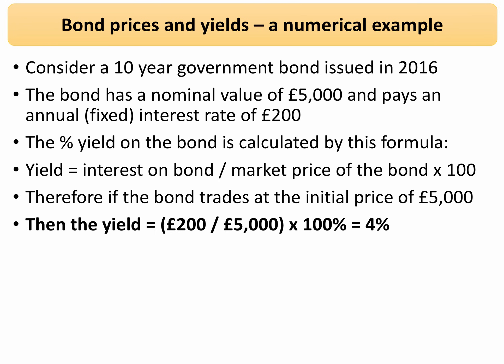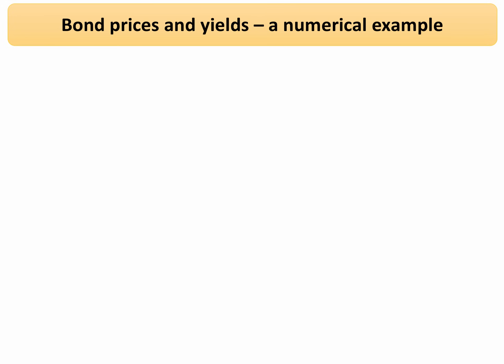Let's work through a numerical example. Consider a 10-year bond issued in 2016 with a nominal face value of £5,000 at issue, paying a fixed coupon of £200. The yield is calculated by the formula: yield equals the interest on the bond divided by the market price of the bond, times 100. So the yield is £200 divided by £5,000, multiplied by 100%, giving a yield of 4%.